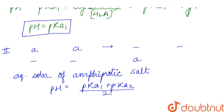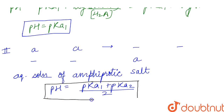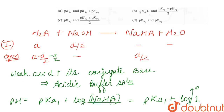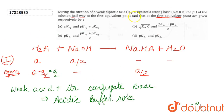So, here we have both pH values. At halfway to the first equivalent point, pH equals pKa₁, and at the first equivalent point, pH equals (pKa₁ plus pKa₂) divided by 2. Therefore, option C is the correct answer.